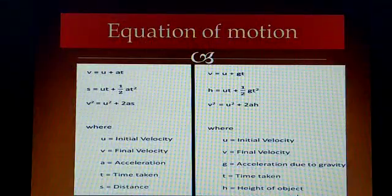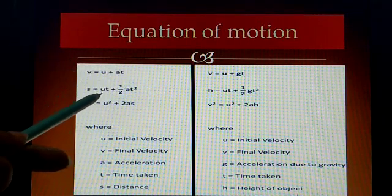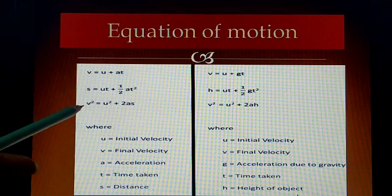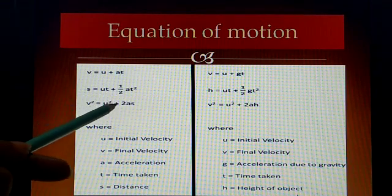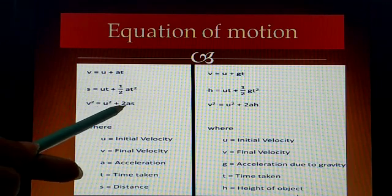Next, we can see the equations of motion. You know all three equations of motion: V = U + AT, S = UT + ½AT², and V² - U² = 2AS. It can be changed to V² = U² + 2AS.